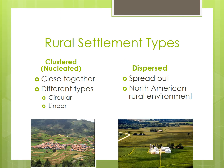Since rural areas tend to be fairly low density, we can examine how people organize themselves on the land. Rural settlement patterns tend to be classified as either clustered or dispersed. Clustered settlements are also known as villages or hamlets. In these settlements, homes are located near each other, with the fields, pastures, and meadows beyond the limits of the village.